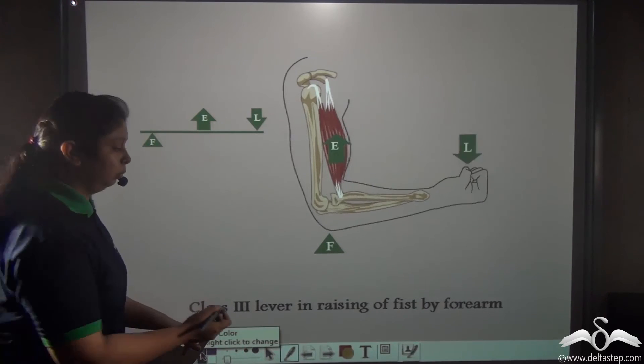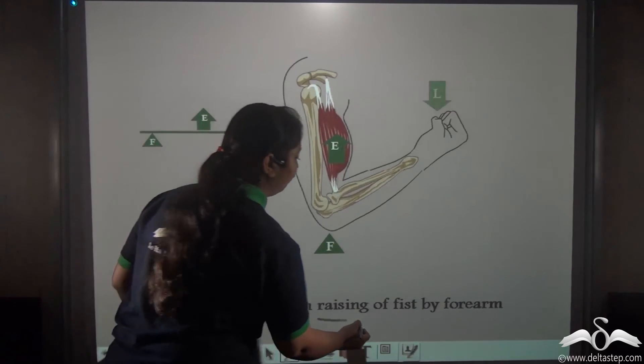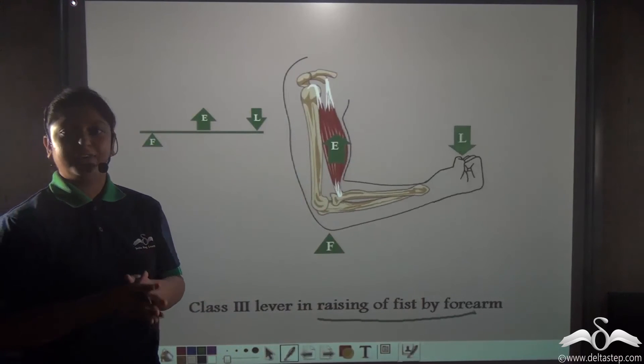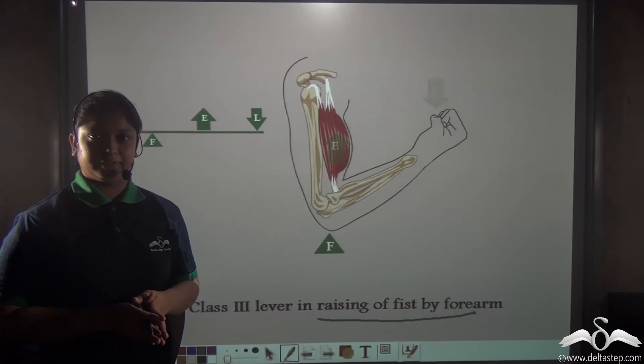So raising of the fist by the forearm is an example of a class 3 lever.